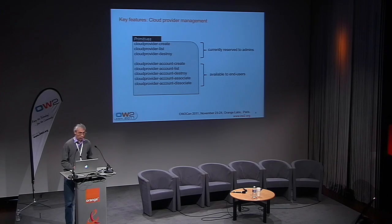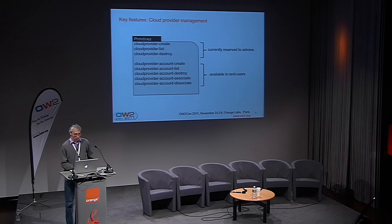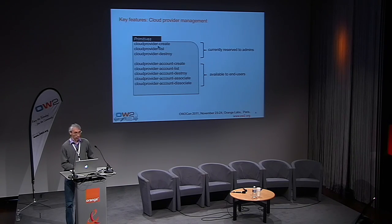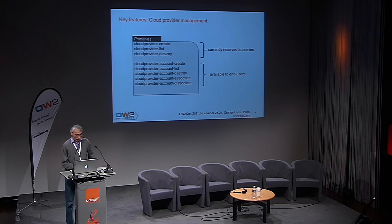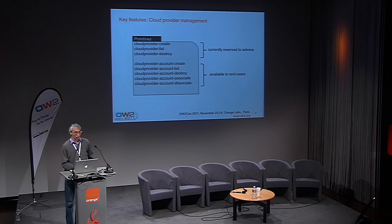Here is a quick summary of the primitives available for an administrator or user to manage cloud providers and cloud provider accounts. As an administrator, I can create a cloud provider and make it available to any project, or destroy a cloud provider. As an end user within a project, I can create my account — say a personal EC2 account — add it, and connect it to my project. I can associate accounts to a project and dissociate them. These are the basic primitives available to manage cloud provider accounts.